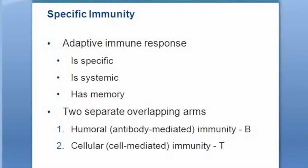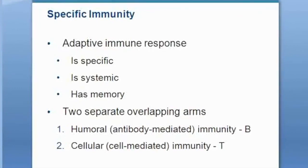What does systemic mean? This immunity doesn't just fight bacteria in your fingertips — if you get infected by the same thing later behind your ear instead of on your fingers, it would fight it there too. That is what systemic means. Specific immunity is systemic — all over your body — because the T cells and B cells that provide immunity can travel all over the body.